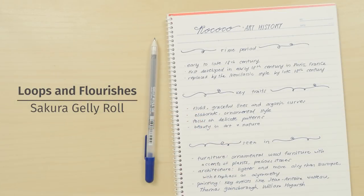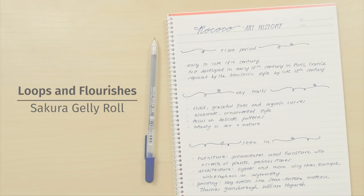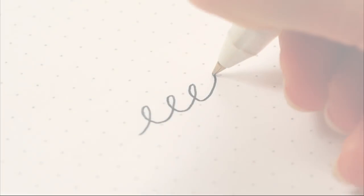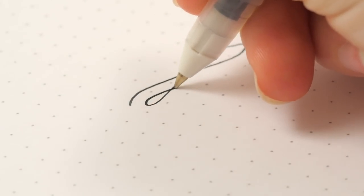For an elegant and sophisticated look, add loops and flourishes. Loops can go in the same direction, or the opposite, depending on your preference.